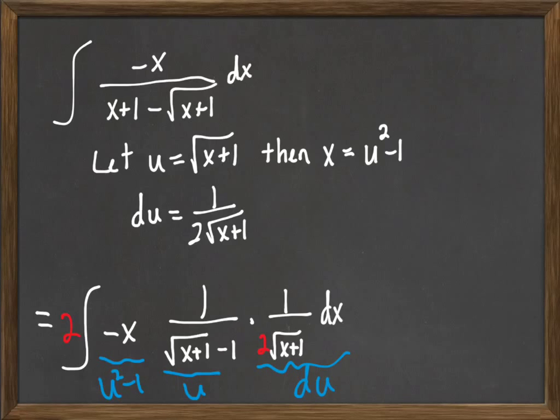So I'm now going to factor out that negative. So I have a negative 2 outside. Then I'm going to have the integral of u squared minus 1. That's the x, and the bottom, that's just going to be u minus 1. And then the other stuff just turns into a du.